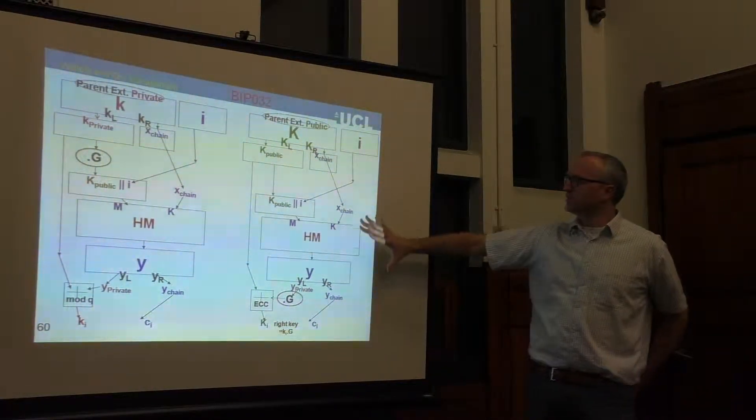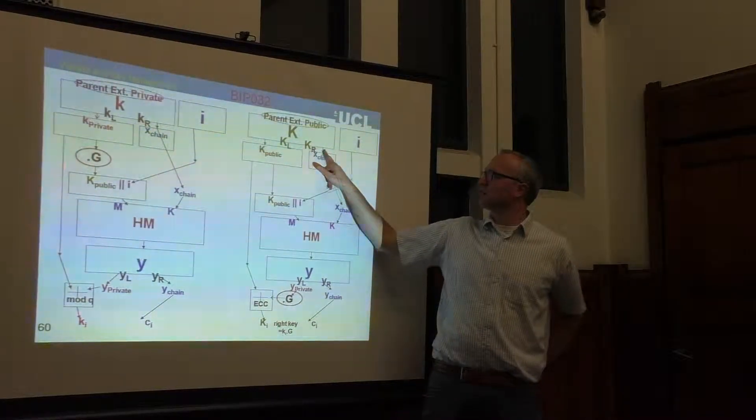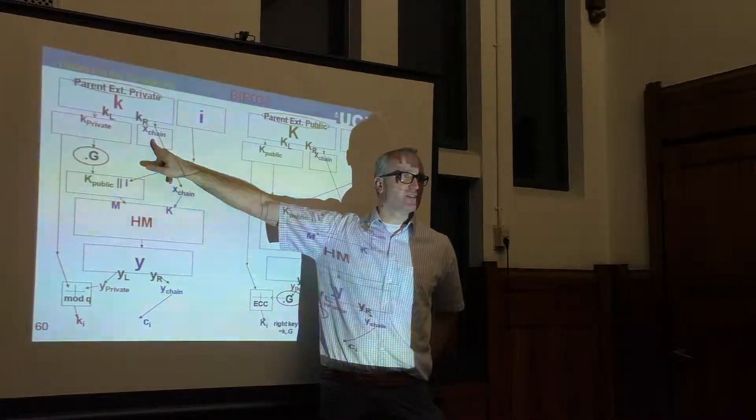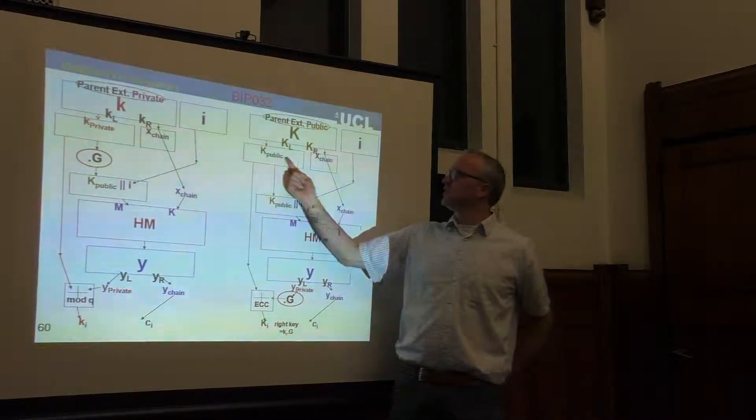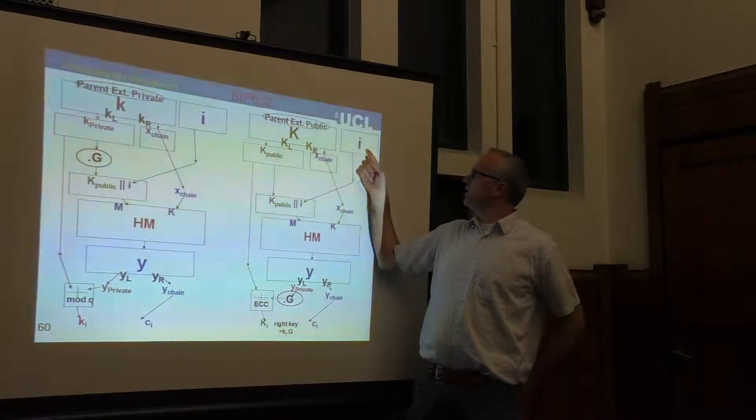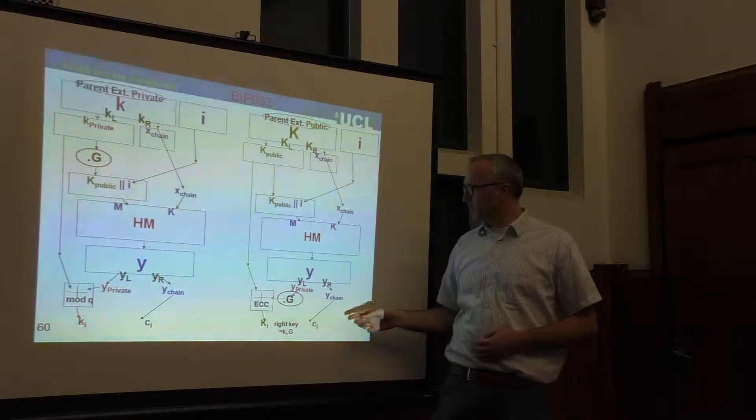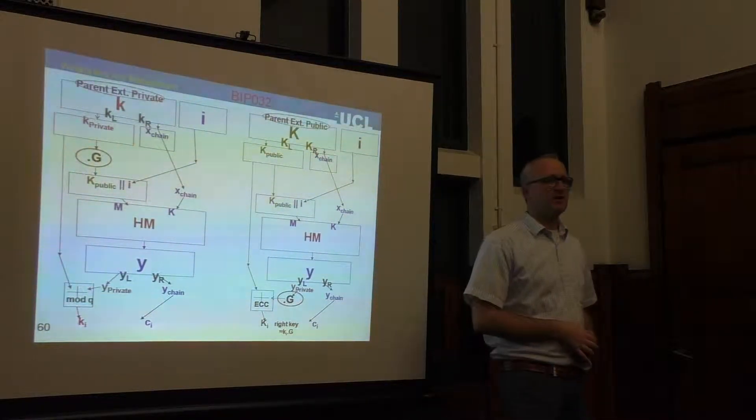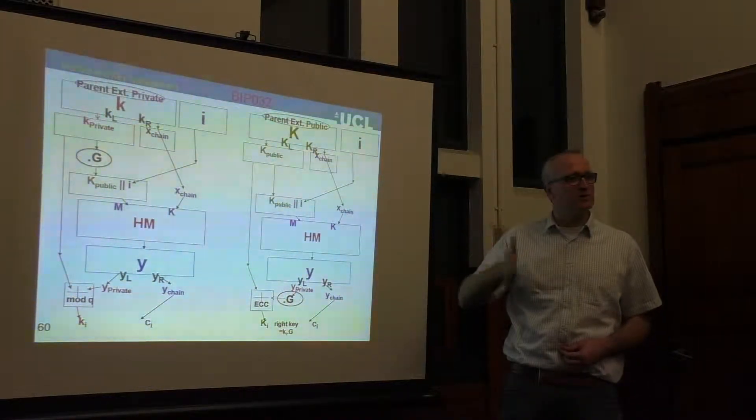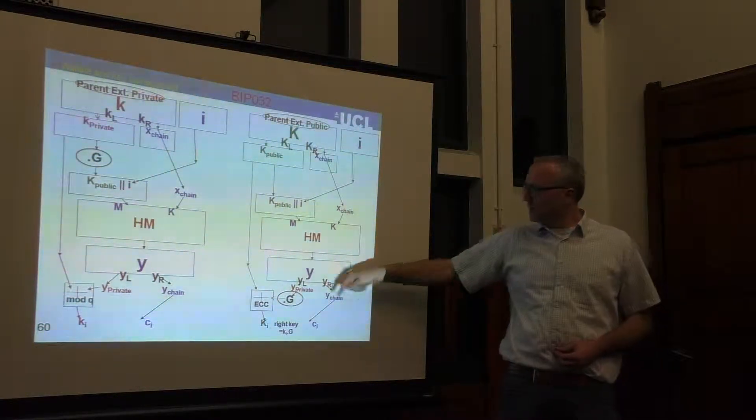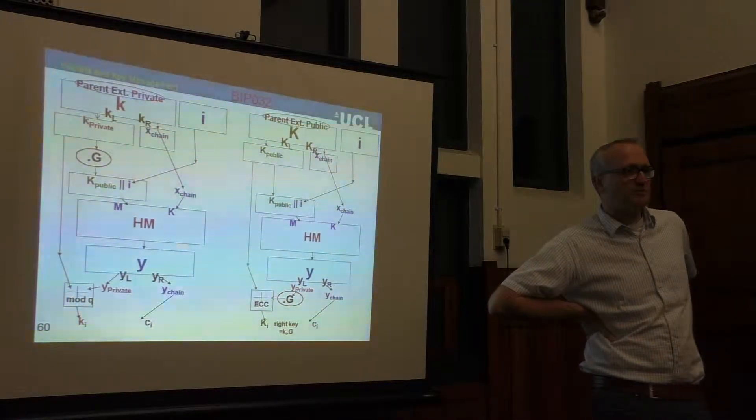So this is like an auditor's process, because you can give this quantity, K-public, and X-chain, which actually, the X-chain is the same as here. It must be the same. So it's an additional secret of 256 bits, which is not bad. You give this to an auditor in a bank, and for every index i, or for any path, because you can do it across several levels, for any path, he can recompute the public key of every user, and also for every individual transaction.